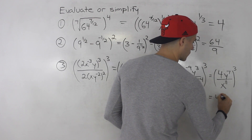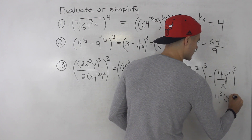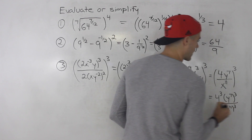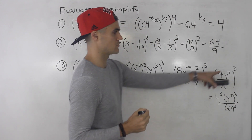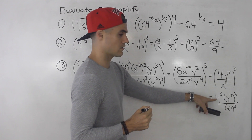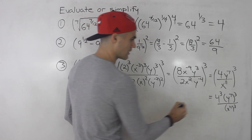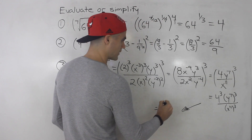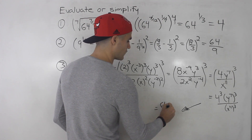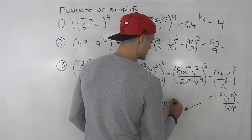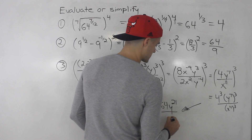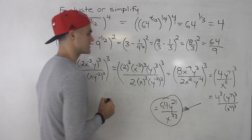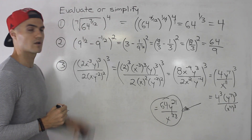From here, we distribute the exponent of 3 to the numerator and the denominator. The 4 goes to the power of 3, y to the 7 goes to the power of 3, and x to the 11 goes to the power of 3. So the final answer: 4 to the power of 3 is 64, 7 times 3 is 21, and 11 times 3 is 33. So the final answer for number 3 is 64y to the 21 over x to the 33.